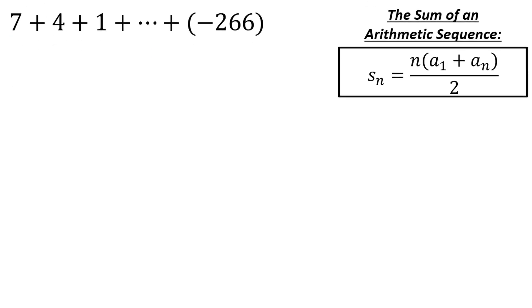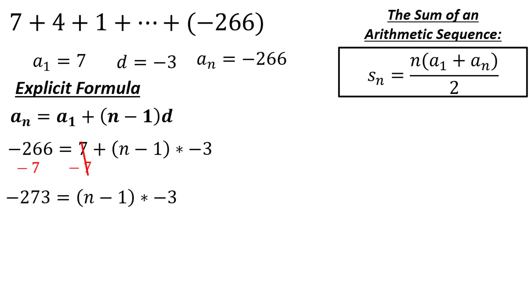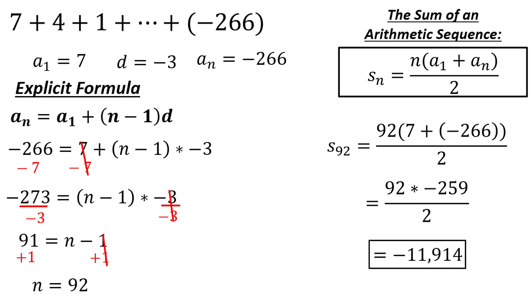How about 7 plus 4 plus 1 plus ... plus negative 266? A sub 1 is equal to 7, d is equal to negative 3, and a sub n is equal to negative 266. Plugging into the explicit formula: negative 266 equals 7 plus (n minus 1) times negative 3. Subtracting 7: negative 273 equals (n minus 1) times negative 3. Dividing by negative 3: 91 equals n minus 1. Adding 1: n equals 92. Plugging into the sum formula: s sub 92 equals 92 times (7 plus negative 266) divided by 2, which is 92 times negative 259 divided by 2, which simplifies to negative 11,914.